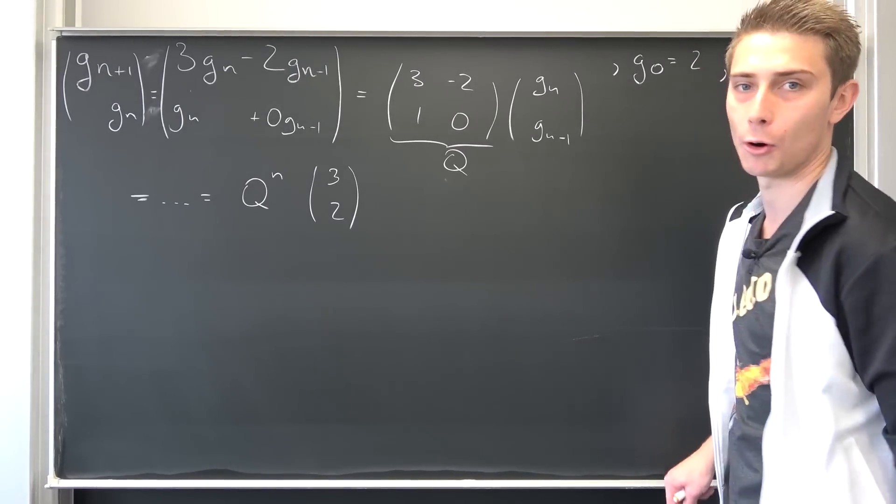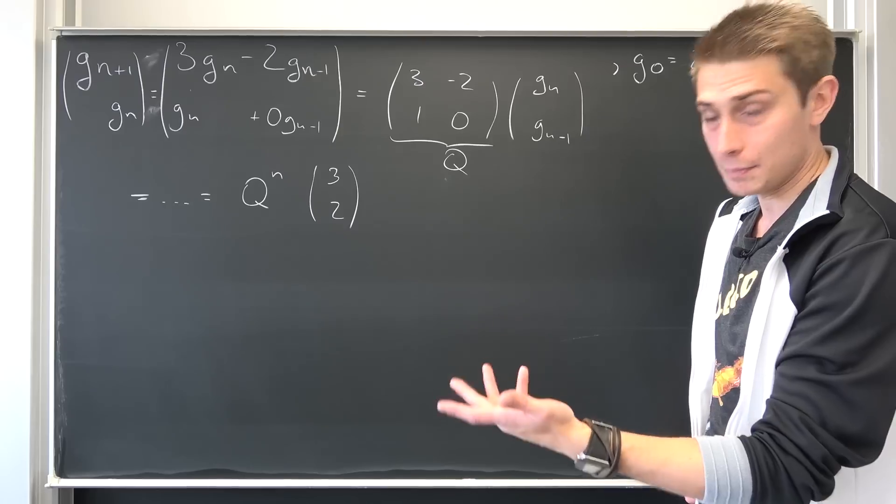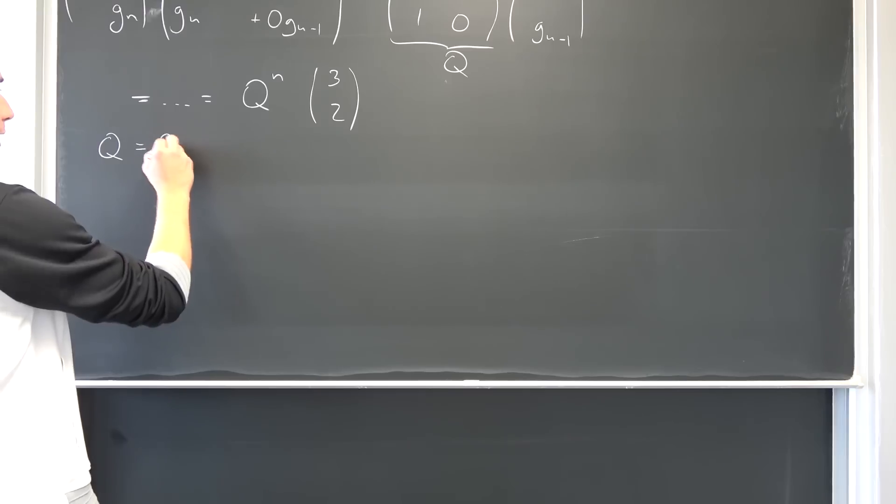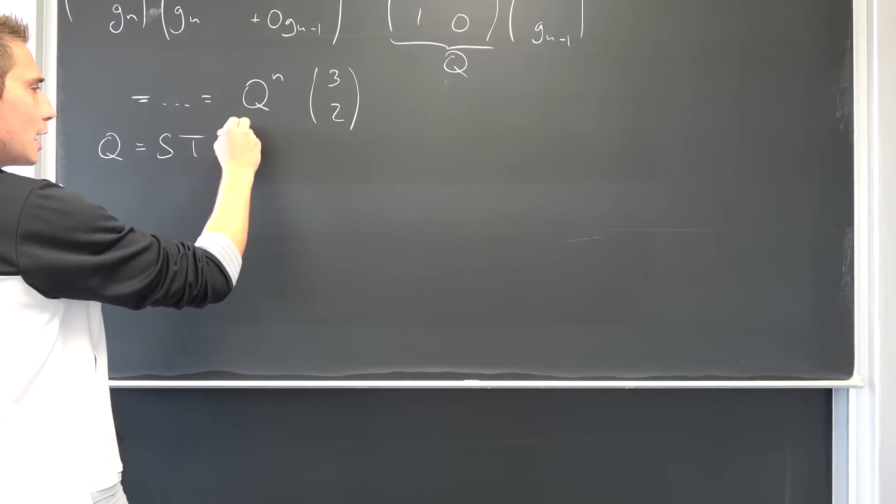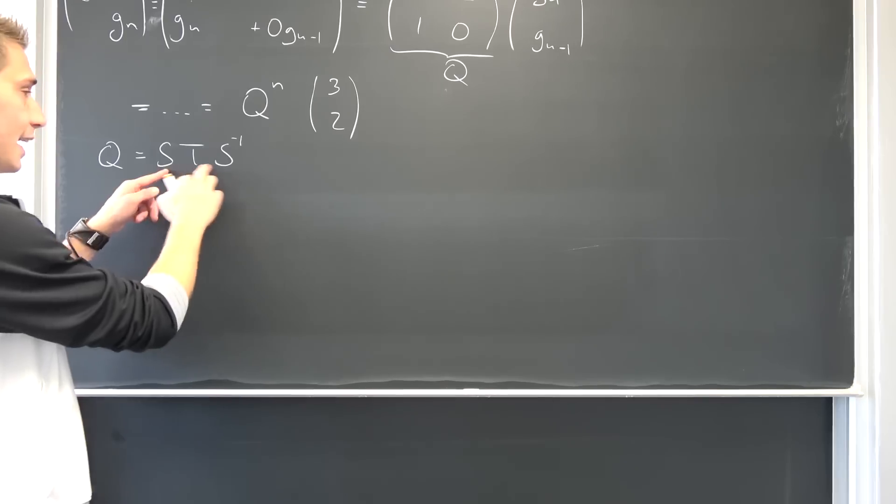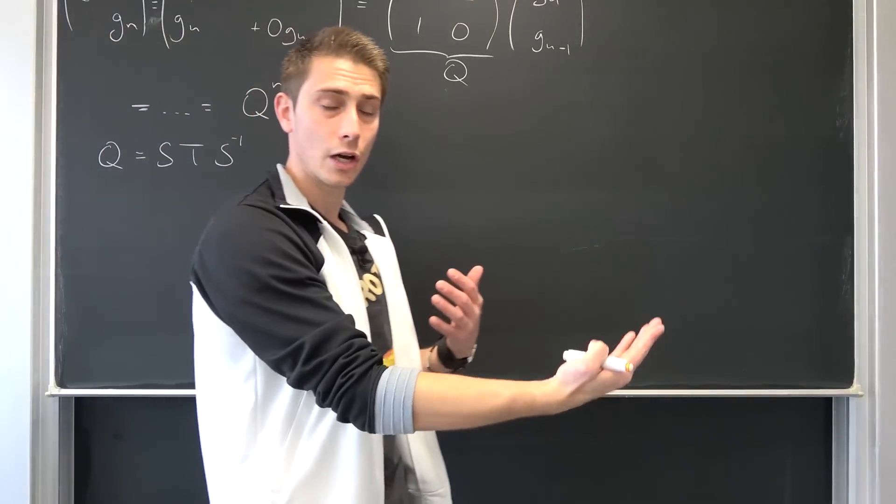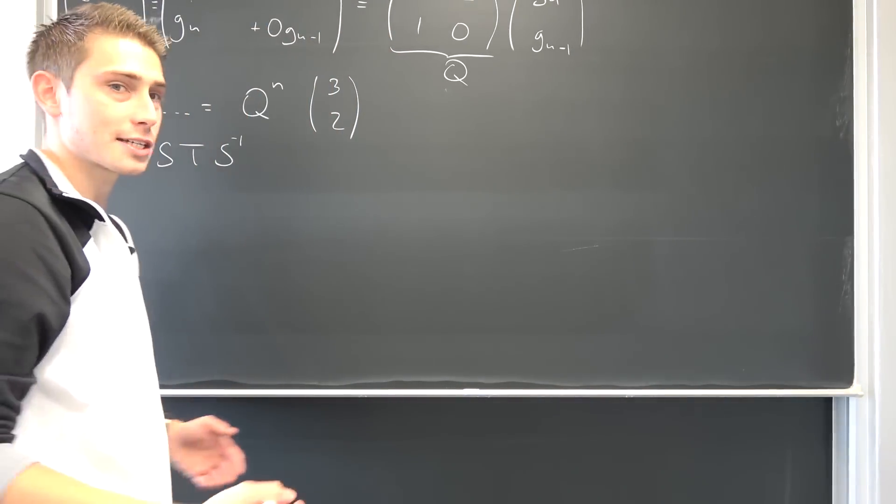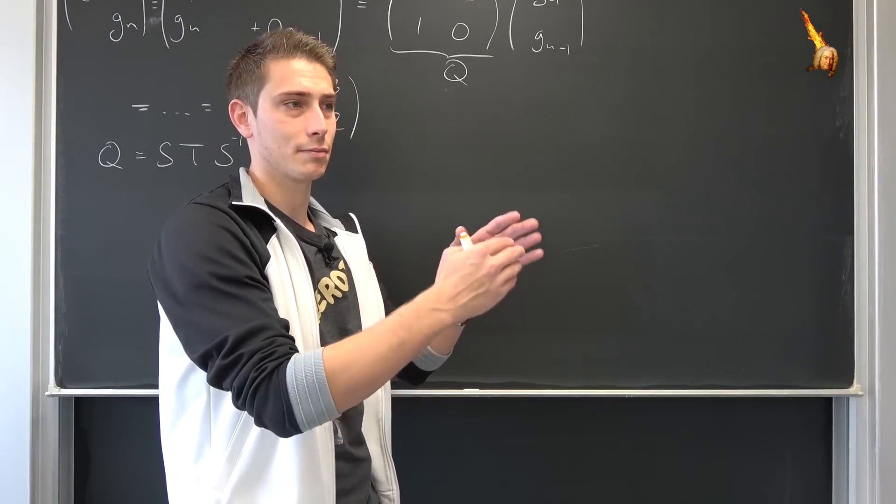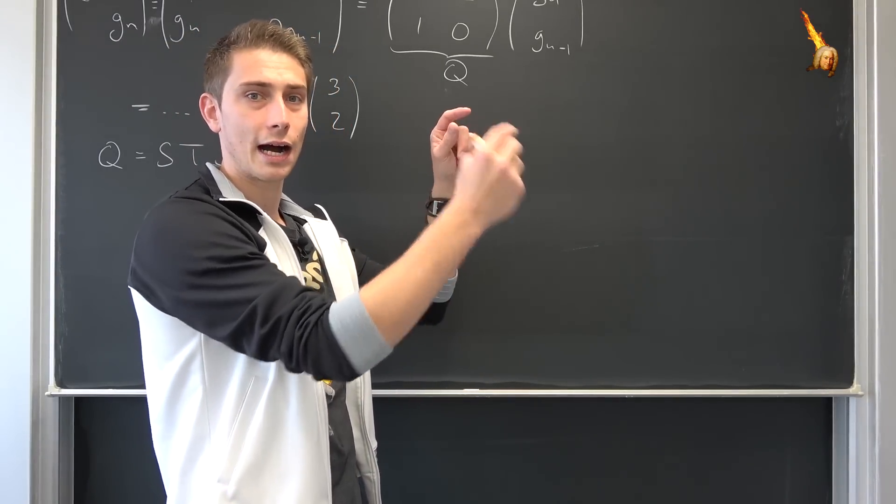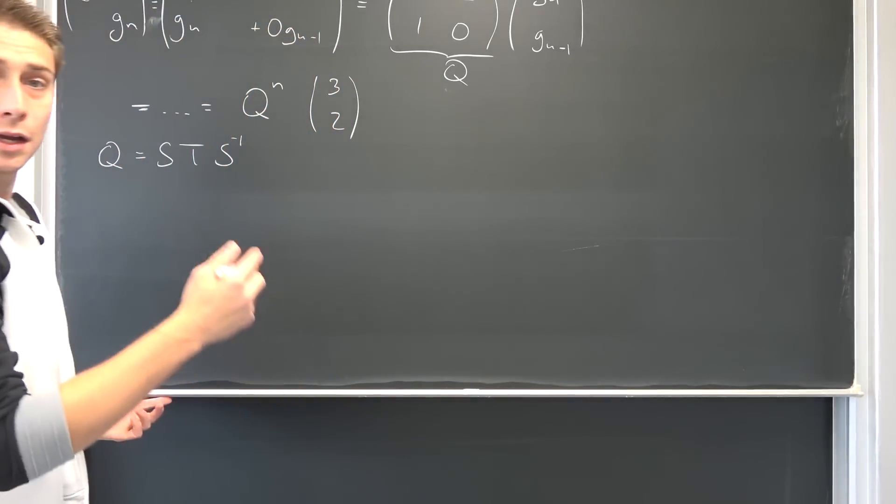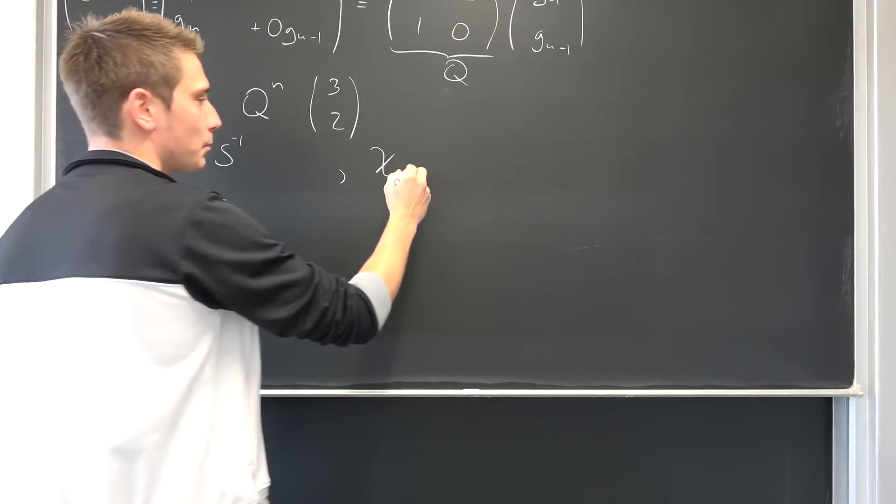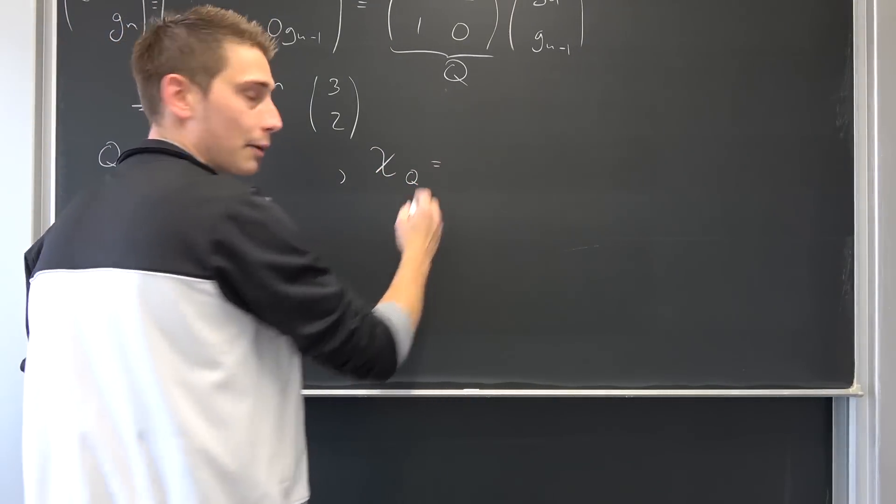I hope you get the point right here. Meaning what you basically want to do is you want to express our Q as S times T times the inverse of S. S is just a tuple of our eigenvectors that we are going to find out and T is just the identity matrix kind of with our eigenvalues plugged in. At first, we are going to find out our eigenvalues, meaning we are going to solve the characteristic polynomial in Q. I'm going to write it out.